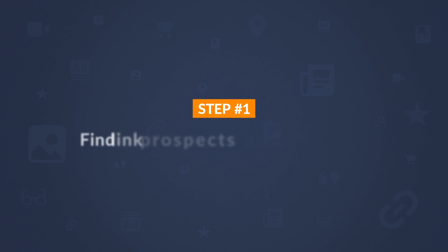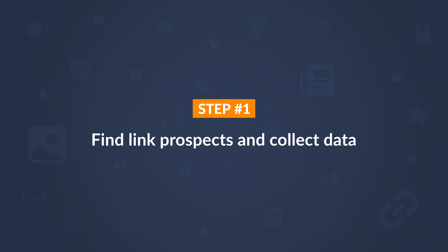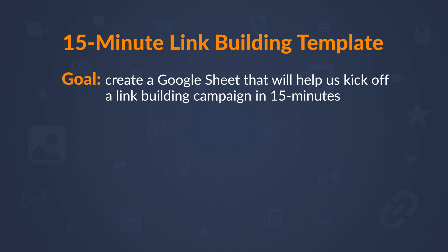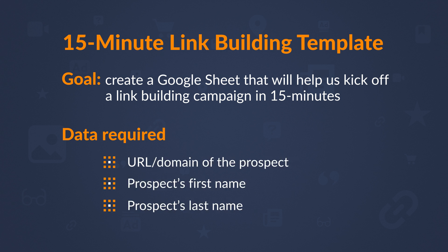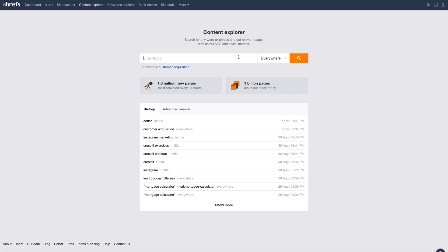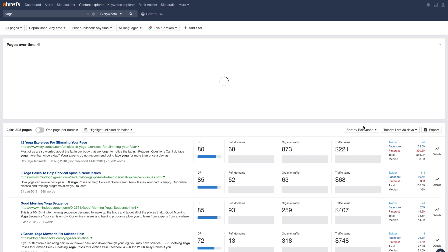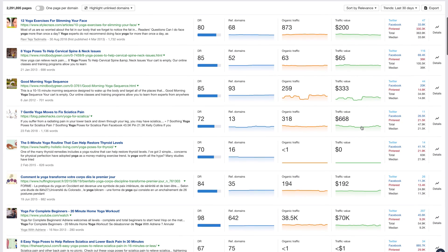The first thing we need to find are link prospects and collect some data. Our goal is to create a Google Sheet that will help us kick off a link building campaign in 15 minutes, and in order to do that, you'll need to find three data points fast: the URL or domain of the prospect, someone's first name, and their last name. The tool we'll be using to find this information is Ahrefs' Content Explorer, which lets you search through over a billion pages of content and get SEO and social metrics for every page.